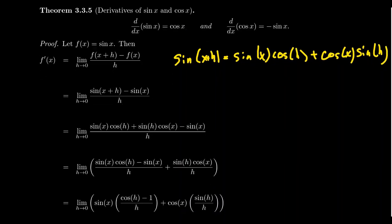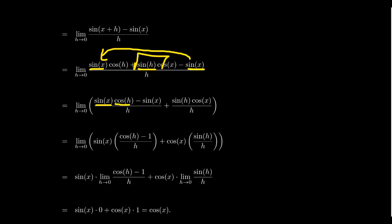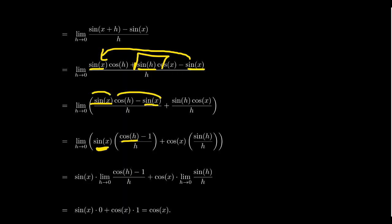Now that we've expanded sine of x plus h, I'm going to start grouping terms according to the angle of the sine. We have a sine of x, a sine of h, and another sine of x, so I want to bring the sine of x terms together and segregate them from the sine of h. That gives us sine of x times cosine of h minus sine of x, all over h, plus sine of h times cosine of x over h. Since we have sine of x in common, we can factor it out, getting sine of x times the quantity cosine h minus one over h.